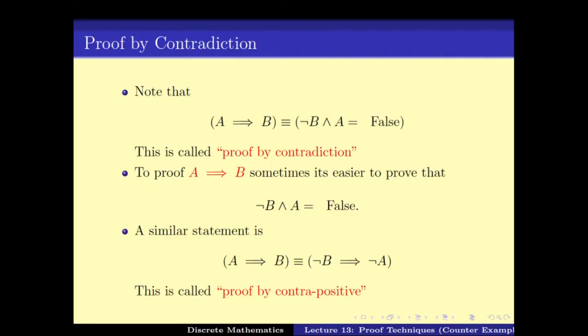The third proof technique we saw was proof by contradiction. The idea is that to prove A implies B, one can instead prove that not B and A leads to a contradiction — that is, not B and A is false. We assume that B is not true and work our way through until we get some statement which is always false.